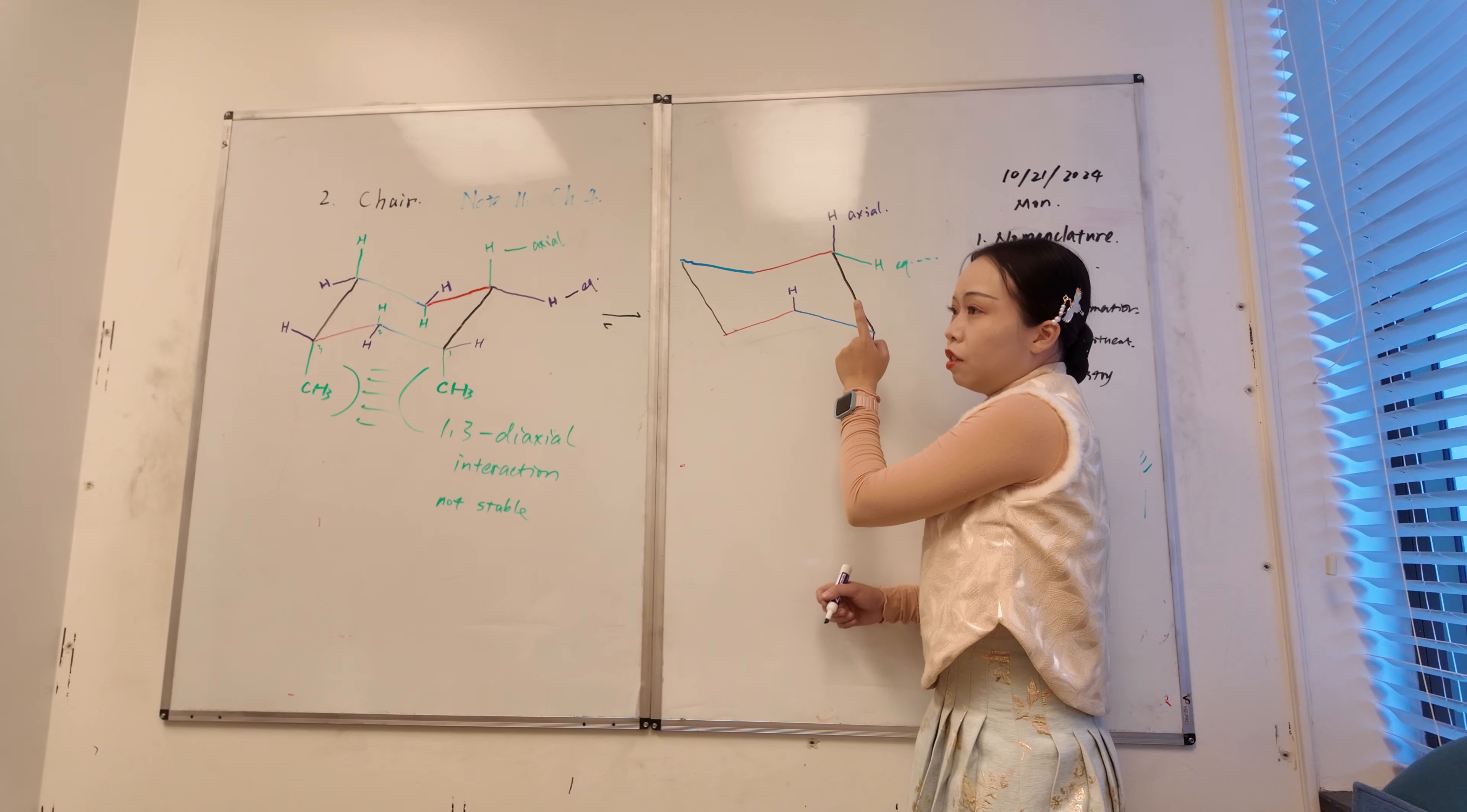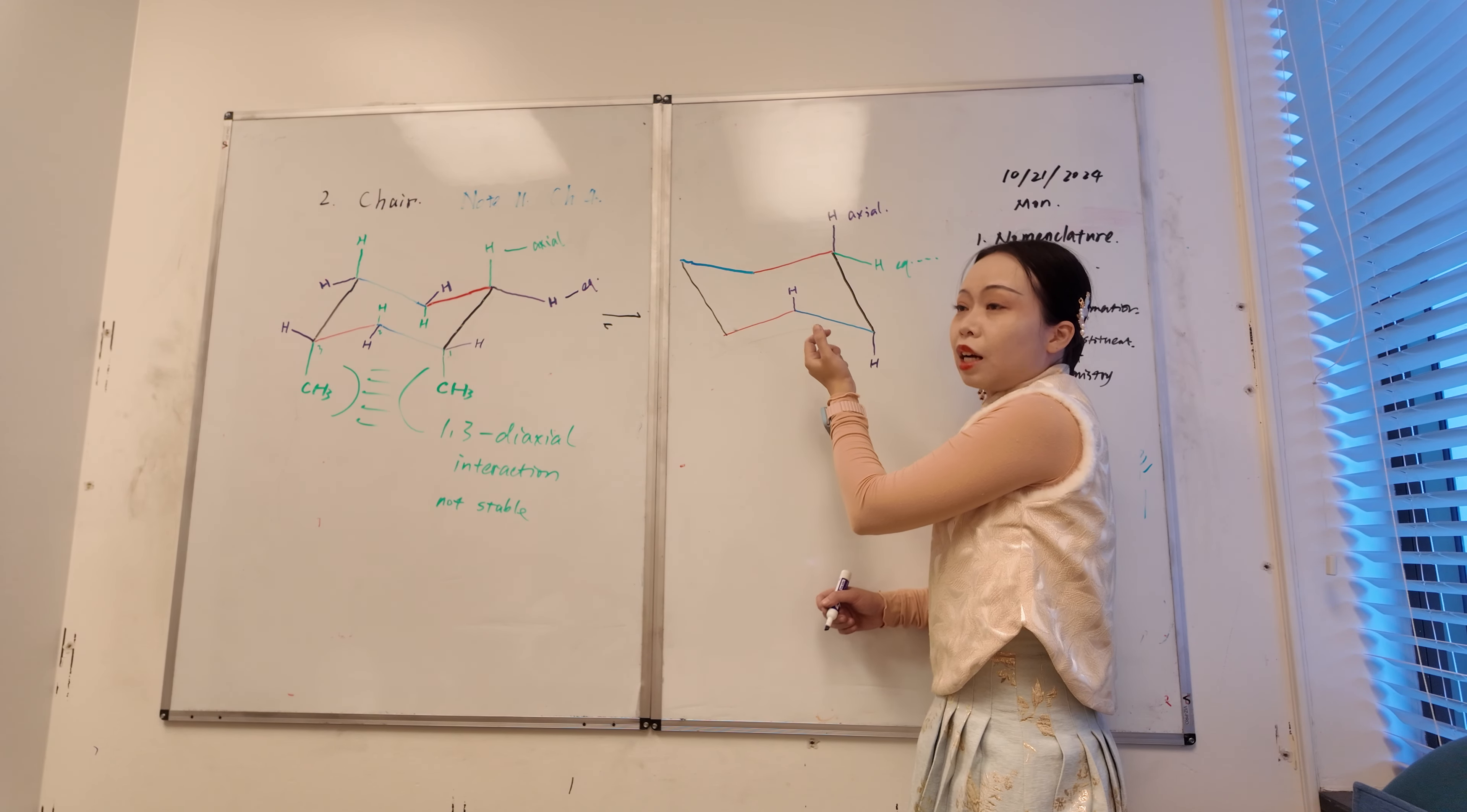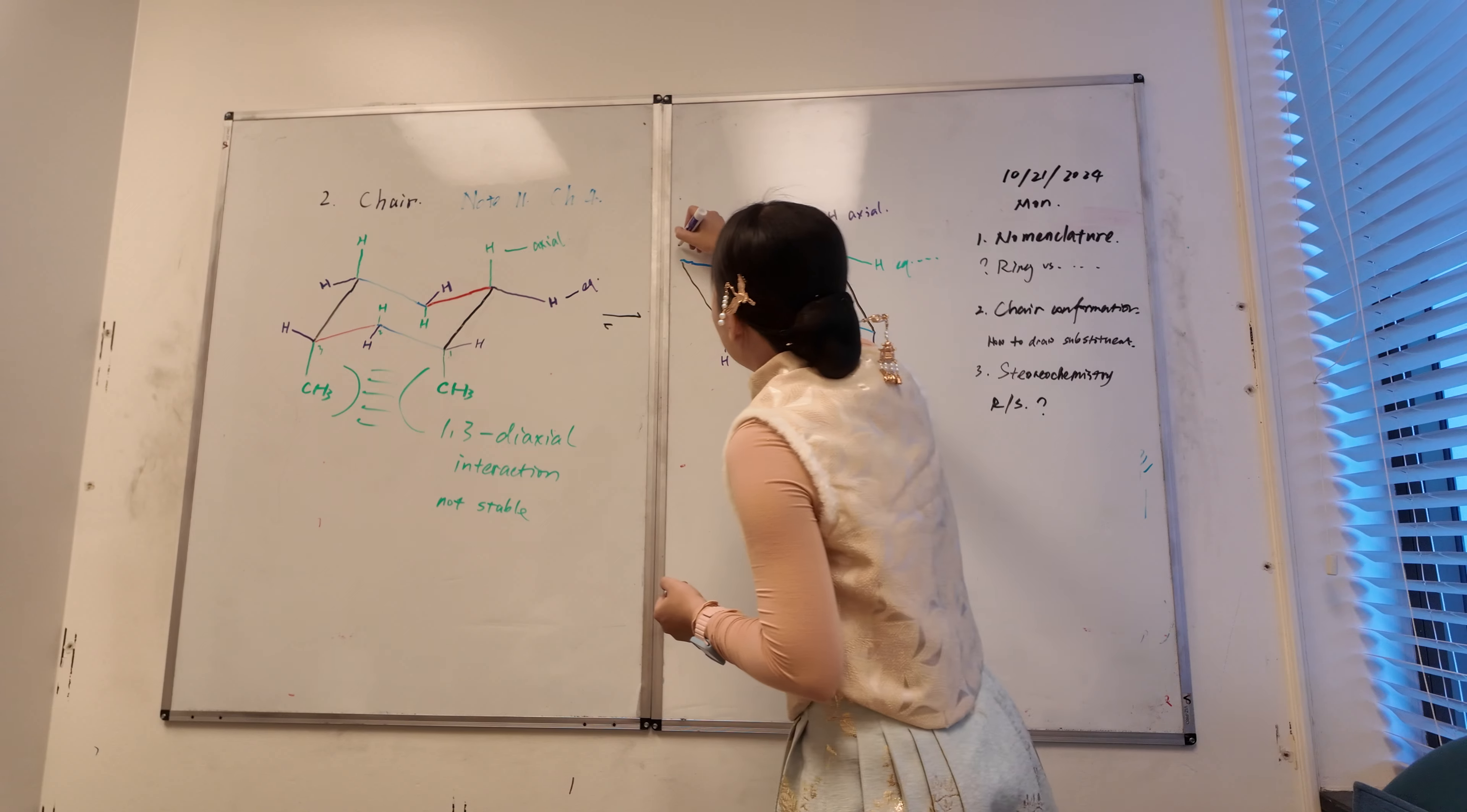So we talk about there no ring strain because it's roughly, that's why they want this chair conformation. So you still follow the rules, but you should not have the hydrogen pointing down. That's weird.